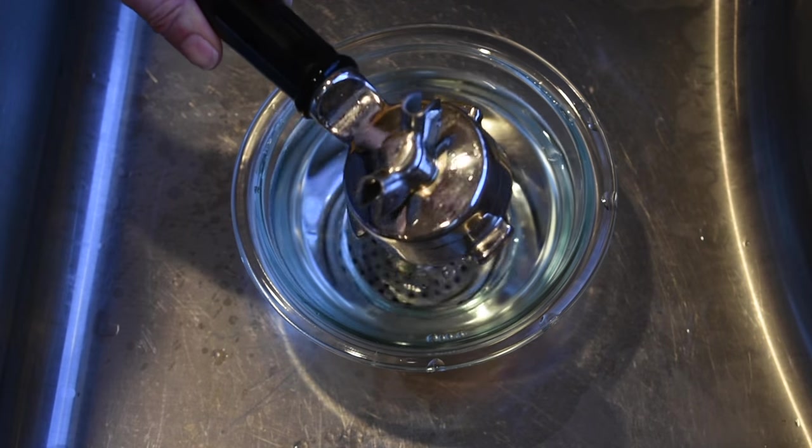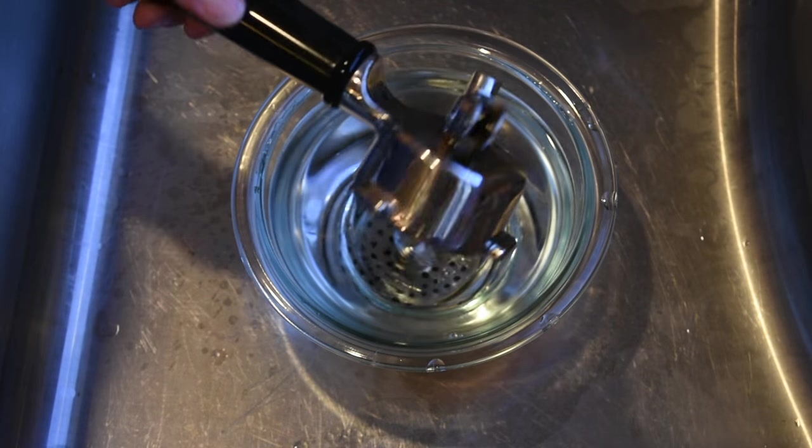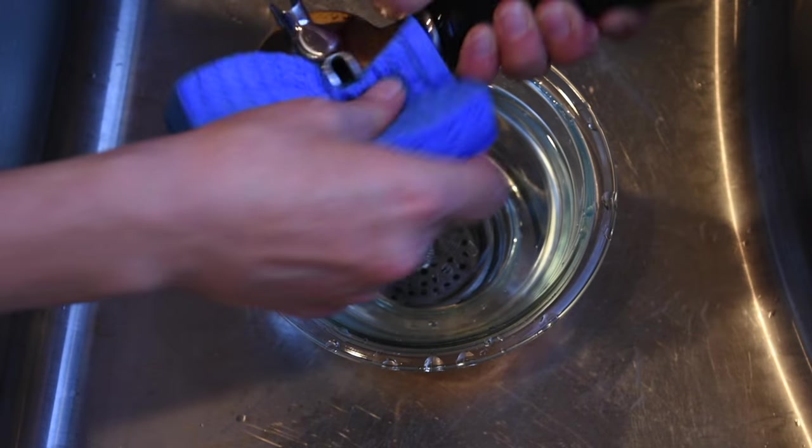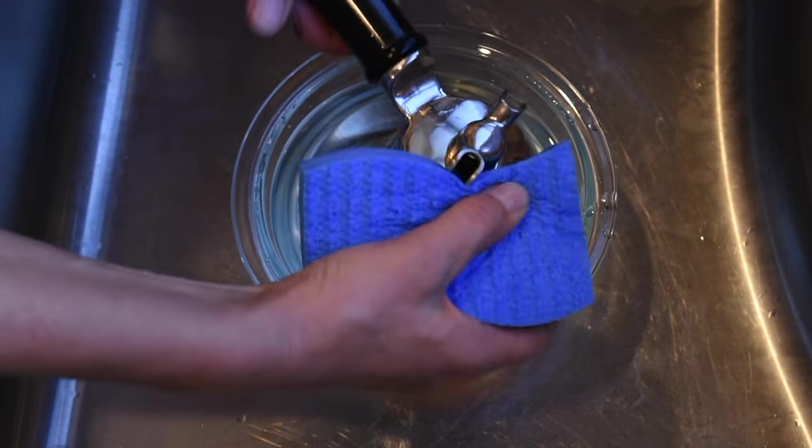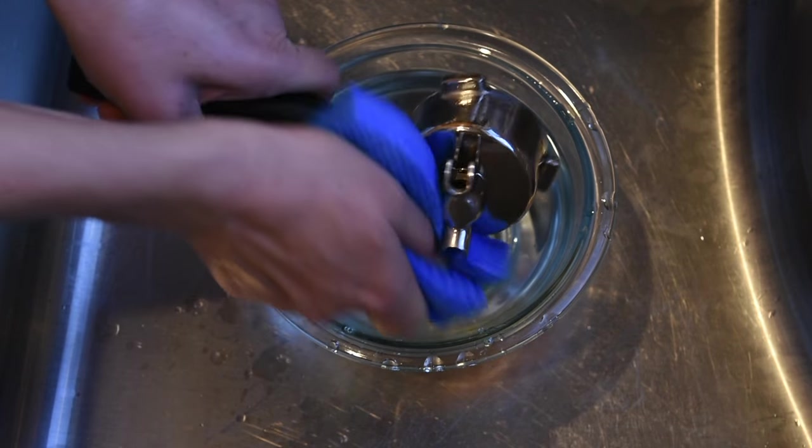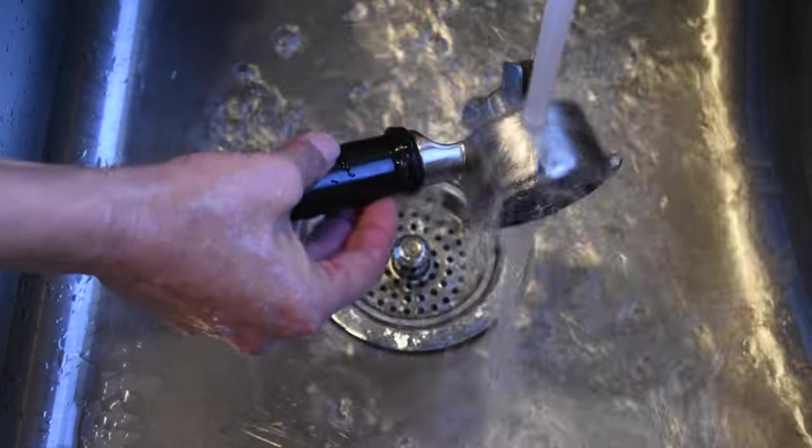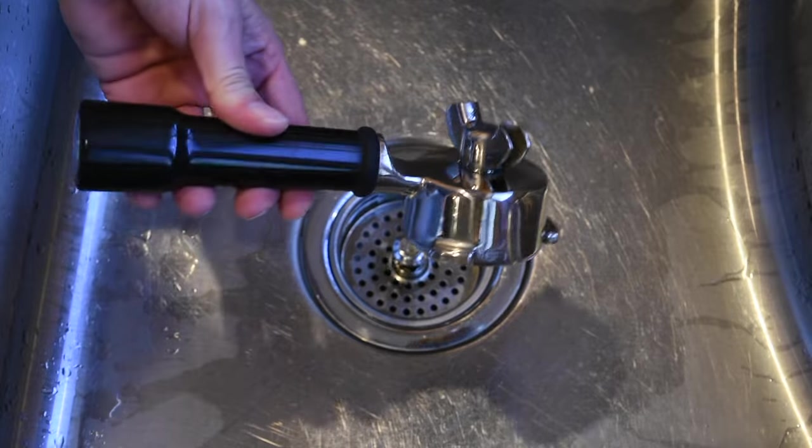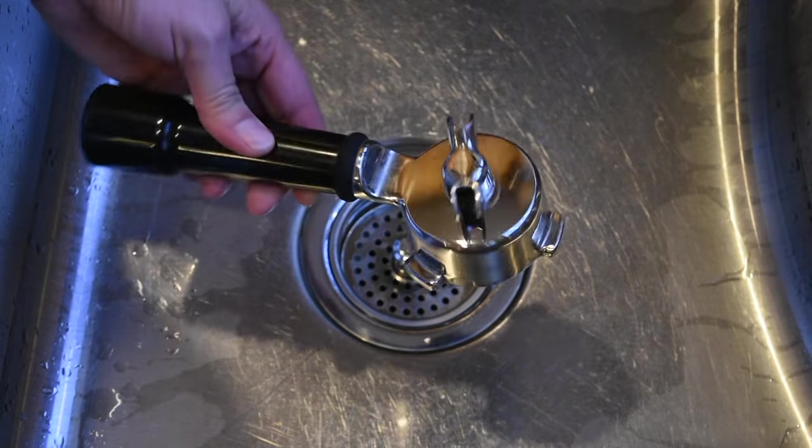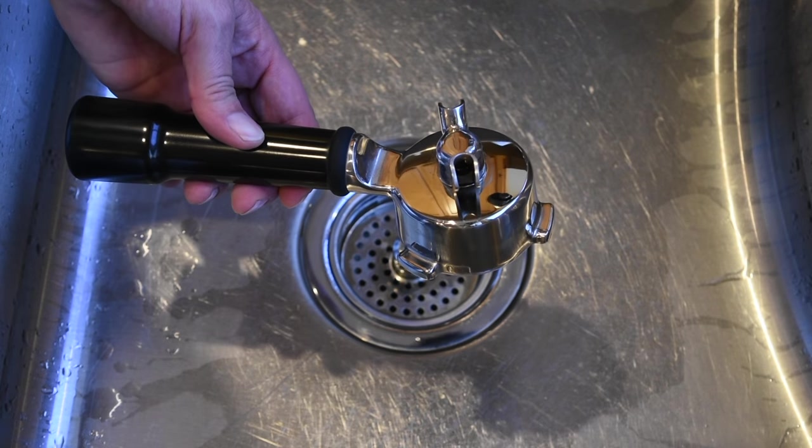As you can see, the hard water spots are almost completely gone, but to give it an extra polish I'm gonna use the sponge and scrub it very nicely, especially the spots where the coffee comes out. Then I'll rinse it with water, and as you can see it's as good as new. So item number two done.